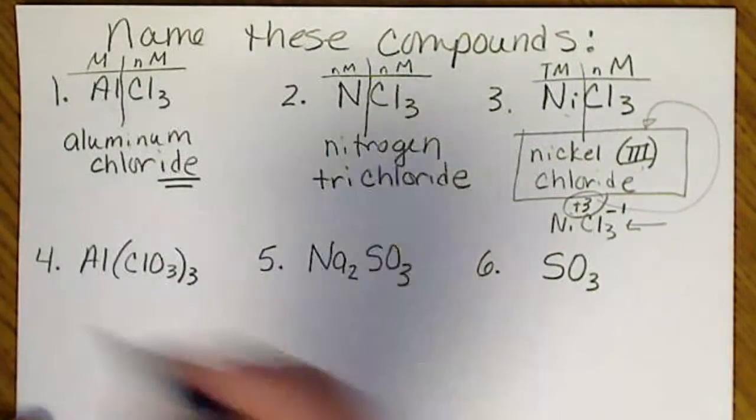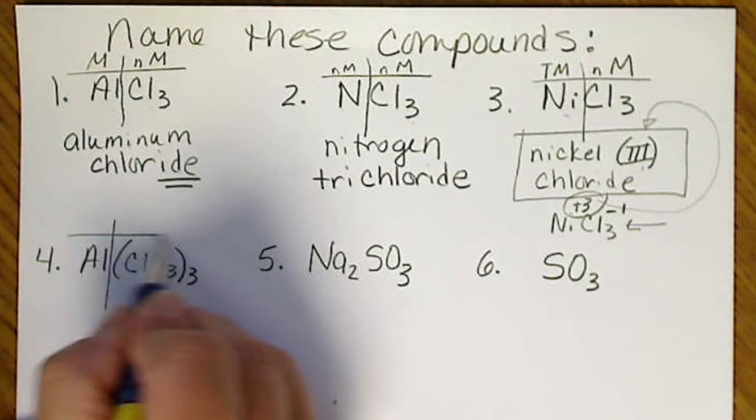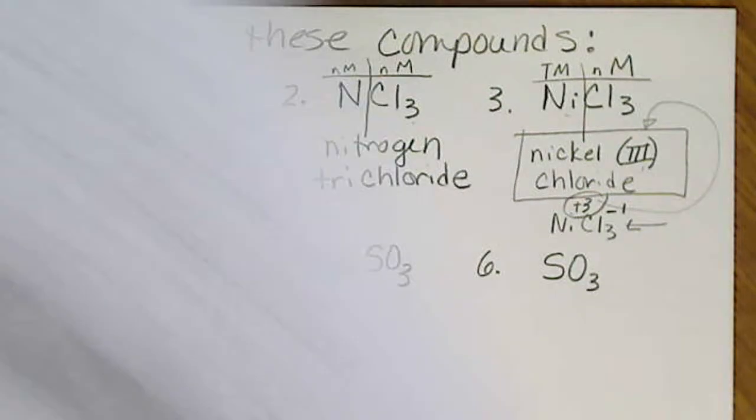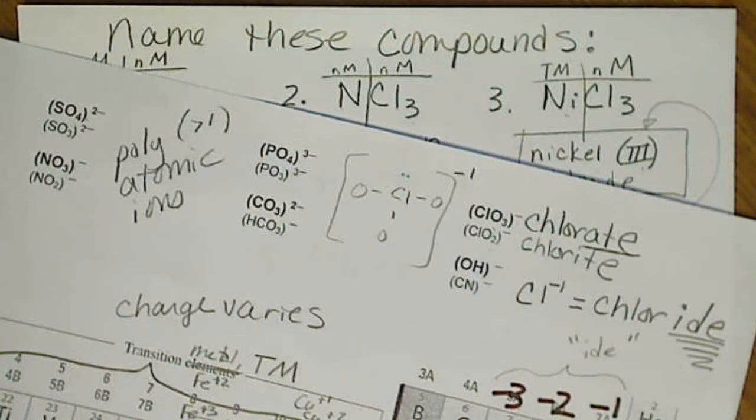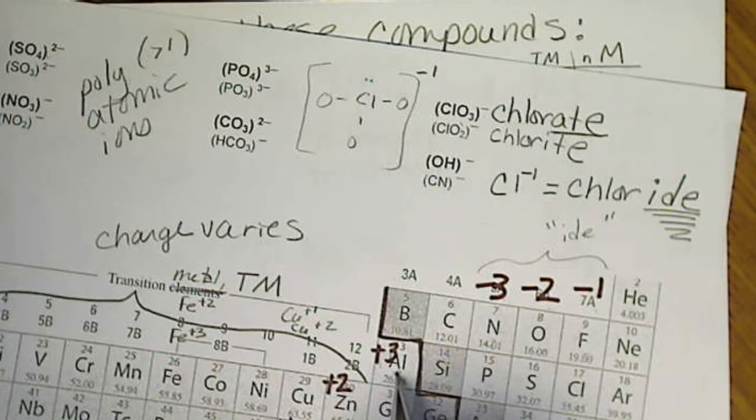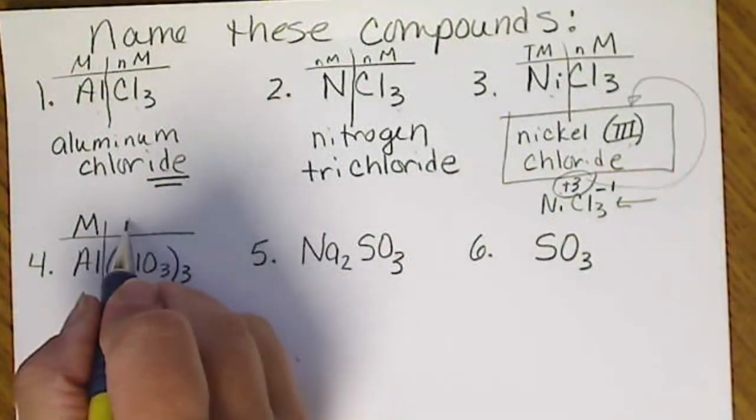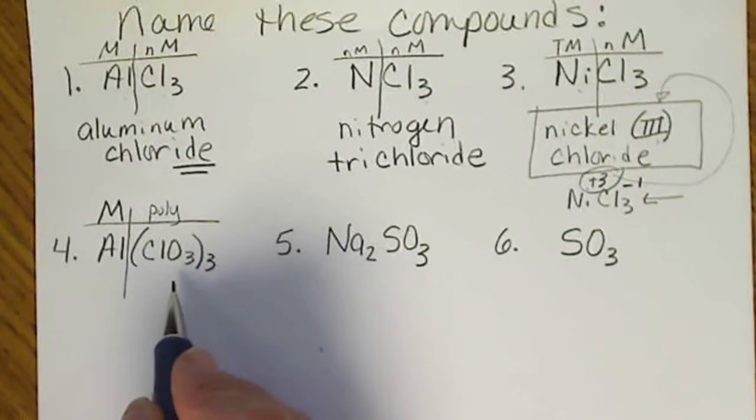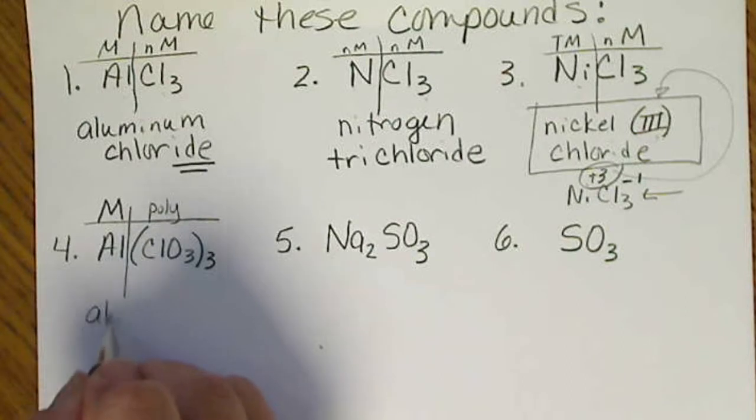Number four, we draw a line after the first atom. This is a simple metal, meaning we always know what its charge is. We don't have to say aluminum(III) because aluminum always has the same charge. And this is a poly or a group. So this is aluminum...